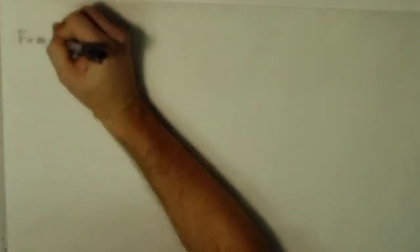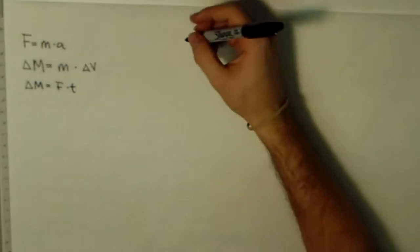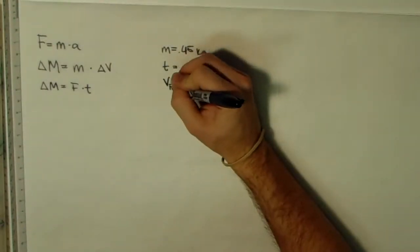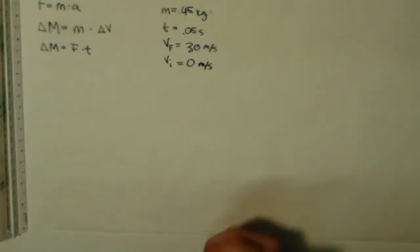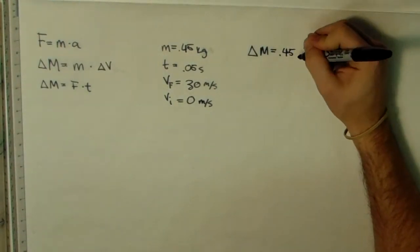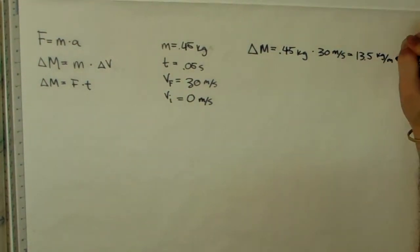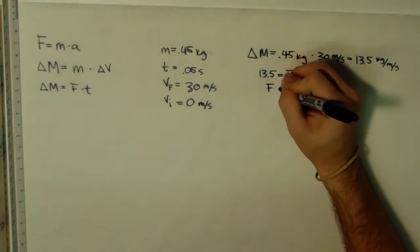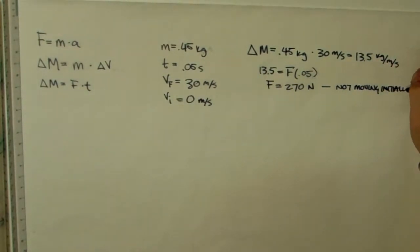We began with the equation for force and the impulse-momentum formula of Newton's second law: an object's change in momentum is equal to its mass multiplied by its change in velocity. Using substitution, change in momentum also equals force multiplied by time. We plugged in 0.45 kilograms as the mass of the soccer ball, 0.05 seconds as the contact time with the foot, and 30 meters per second as its final velocity with an initial velocity of 0 meters per second. We found the change in momentum to be 13.5 kg·m/s, and the total force to get a soccer ball at rest moving to 30 m/s is 270 newtons.